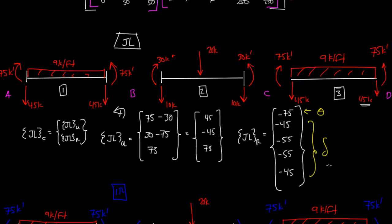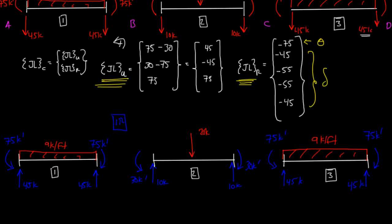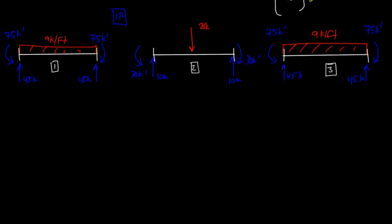So we have our JL unrestrained column vector and our JL restrained column vector. Let's go ahead and calculate the FM matrix — we need our internal reaction diagram here. To calculate our FM matrix, FM of element 1 is equal to the end reactions for element 1.